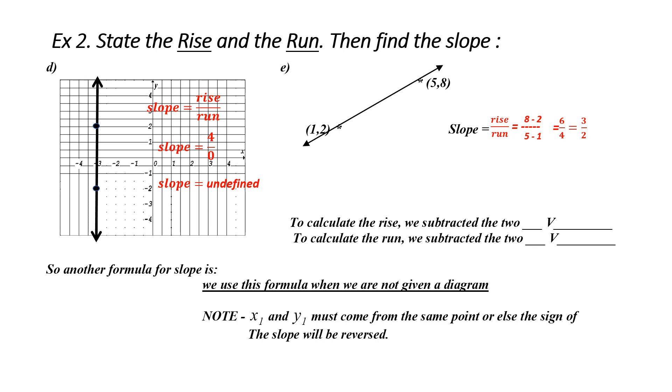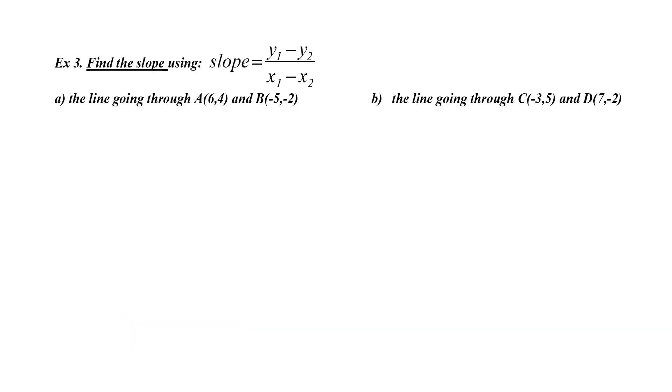How did we calculate rise? We subtracted the two y values. How did we calculate run? We subtracted the two x values. This leads us into our next formula. We would use this formula when we're not given the diagram and when we are given two points. The formula is slope is equal to y1 minus y2 over x1 minus x2. It's very important to note that x1 and y1 have to come from the same point. Notice, the letter we use to designate slope is m.